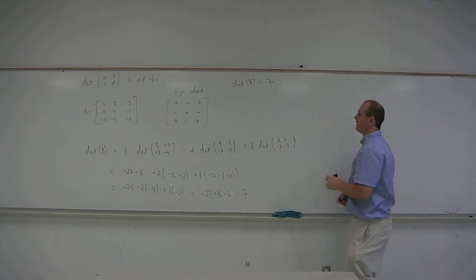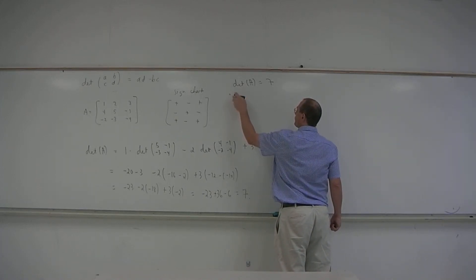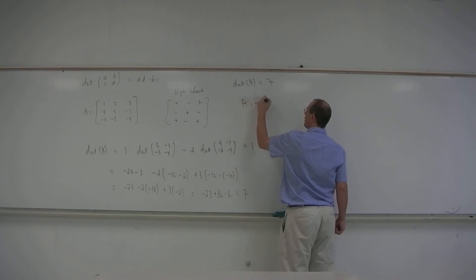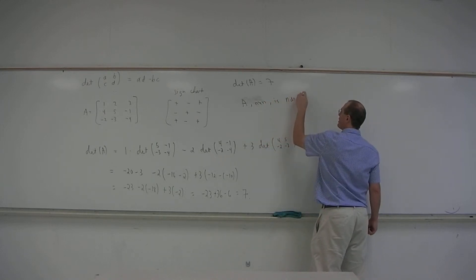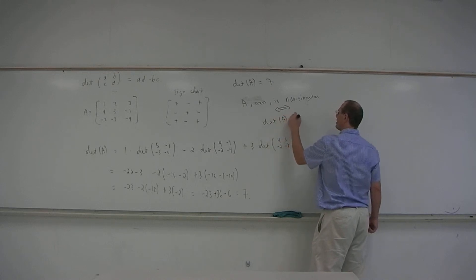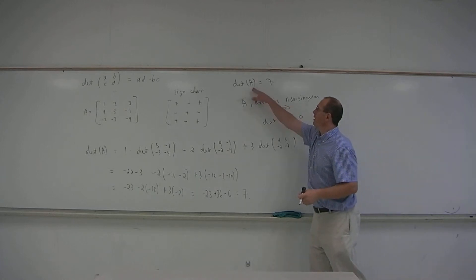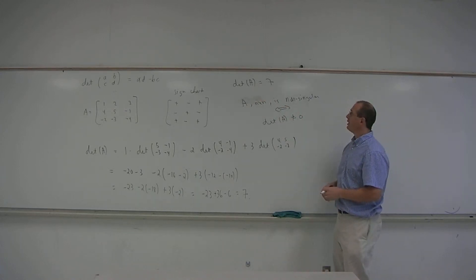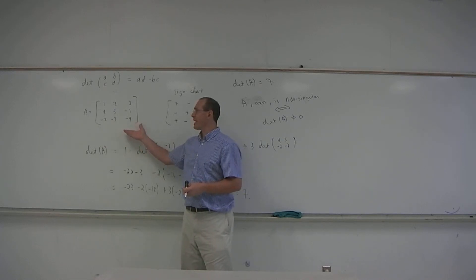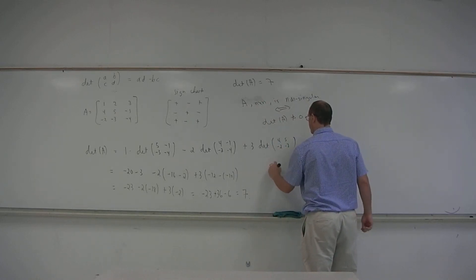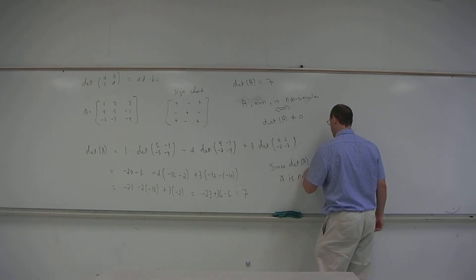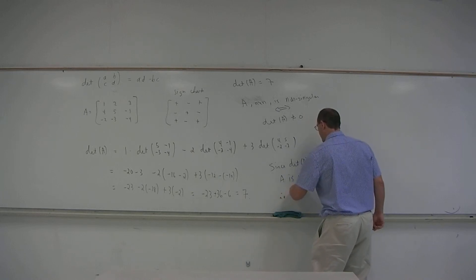One significance of this number is a theorem that says a given square matrix A, n by n, is non-singular — meaning it has an inverse — if and only if the determinant of A is not 0. In this particular case, the determinant of our matrix A is 7, not 0, so matrix A is non-singular. In other words, the matrix A inverse exists.